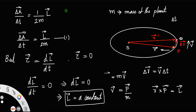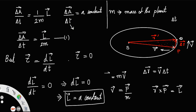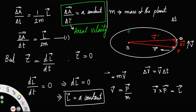Looking at equation number 1, we know the mass of the planet does not change with its motion, so mass remains constant, and angular momentum is also constant — which means delta A by delta T is a constant. This delta A by delta T is called the areal velocity. This is Kepler's second law of planetary motion: a planet sweeps equal areas in equal intervals of time, or the radius vector of a planet revolving around the sun sweeps equal areas in equal intervals of time — that is, delta A by delta T remains constant.